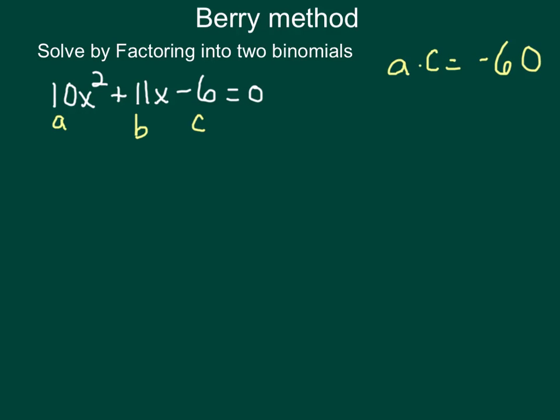Now we have to think about this for a moment. What two numbers multiply together to give me negative 60, but when you add them together, give me a positive 11? Two numbers that multiply to negative 60 and add to positive 11 would be 15 and negative 4.